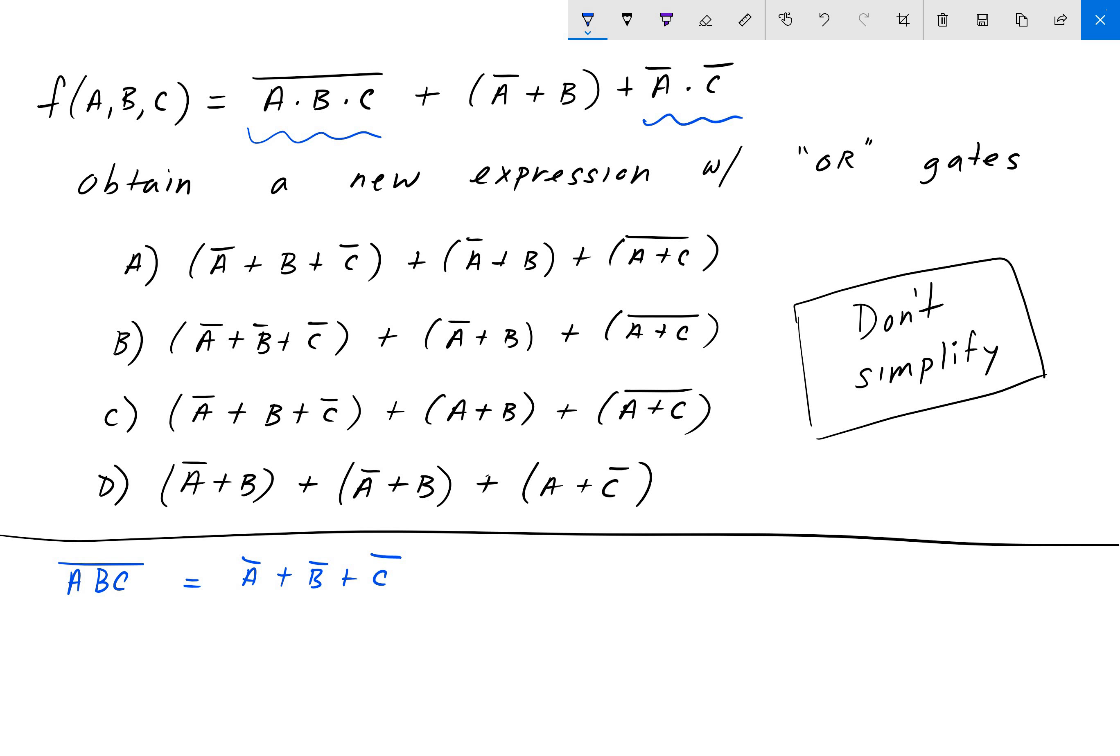And the second term of the expression is already in addition so we don't need to do anything with that. And we just want to convert the third term A'C' and converting that using DeMorgan's laws is (A plus C)'.